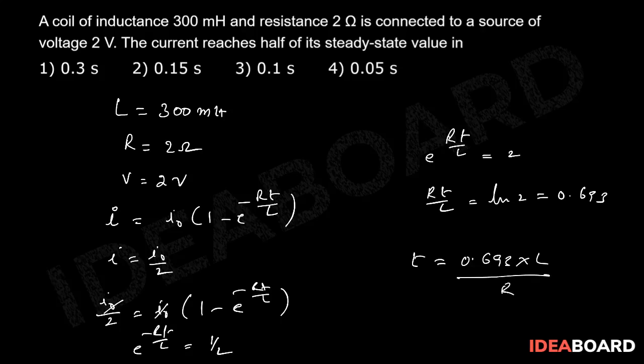That is equal to 0.693 into 300 into 10 power minus 3 divided by 2, which is equal to 0.1 second.